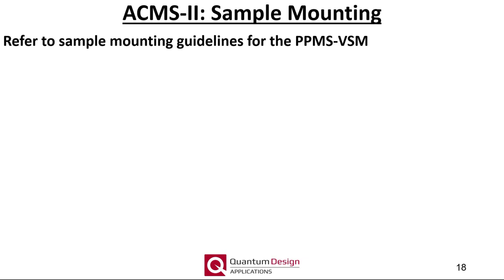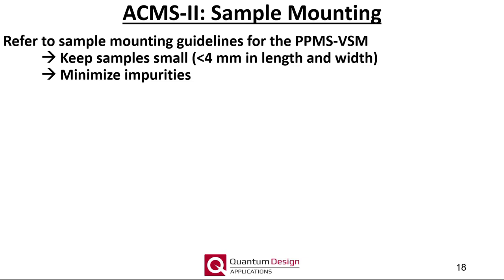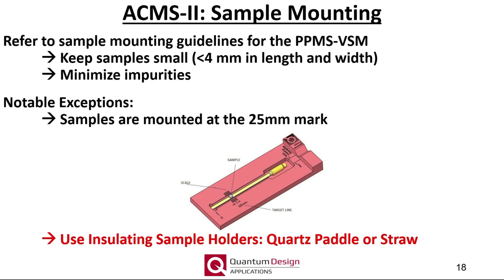Moving on to sample mounting. I will refer you to the sample mounting guidelines within the PPMS VSM webinar, where the two most important things to remember are: keep the samples small — generally less than 4mm in any given dimension is recommended — and minimize impurities within the sample and sample holder. There are two notable exceptions. Firstly, samples are now mounted 25mm from the bottom of the sample holder; while the sample mounting stations look very similar between the VSM and ACMS2, they are in fact different. Secondly, and most importantly, use insulating sample holders such as the quartz paddle or drinking straws, as AC magnetic fields will induce eddy currents within electrically conducting sample holders, which will affect the accuracy of the results.